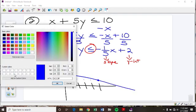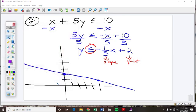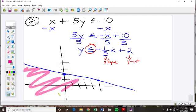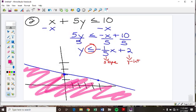Solid line this time. And because it's less than or equal to, we shade below. All right? And that whole area down there is our answer.